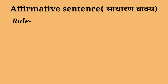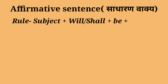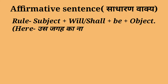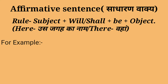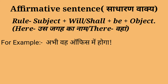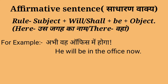Affirmative sentence — saadharan vaakya. For making this we use: Subject + will/shall + be + object. Here, us jagah ka naam 'there' aur 'vaha' hoga. For example: Abhi vah office mein hoga — He will be in the office now.